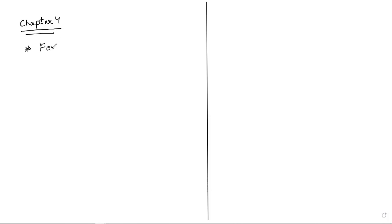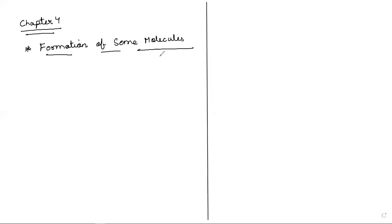We have studied why carbon forms covalent bonds and why it is necessary to form covalent bonds instead of ionic bonds. Now let us see the formation of some covalent molecules. We may not fully understand this time, but we will do a lot of examples so we will easily understand.